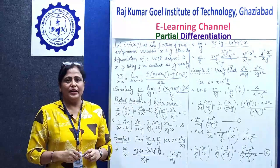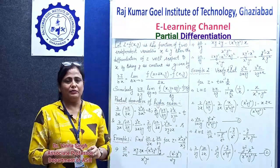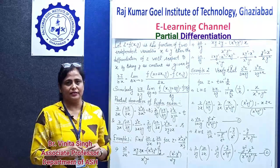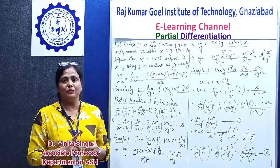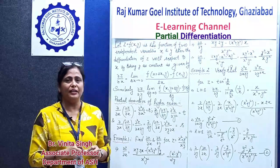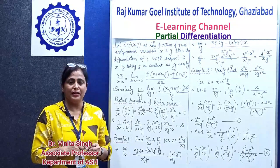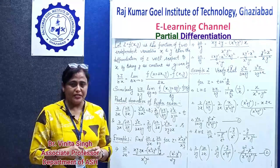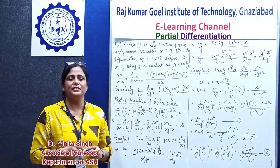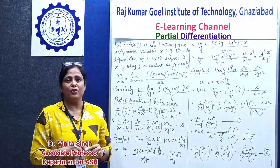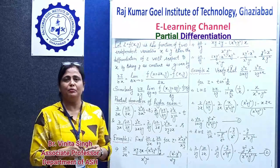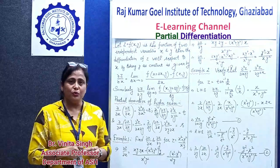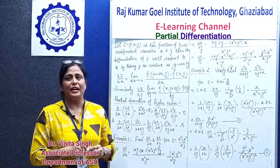In ordinary differentiation, y is a function of a single variable x. There is only one independent variable and y is the dependent variable depending on x. But in partial differentiation, the function involves a minimum of 2 variables or more, and when we apply differentiation in that case, it is known as partial differentiation.